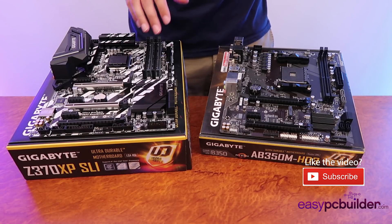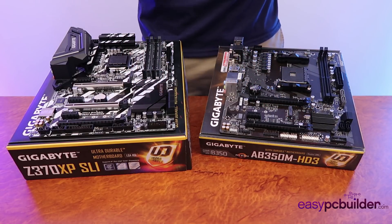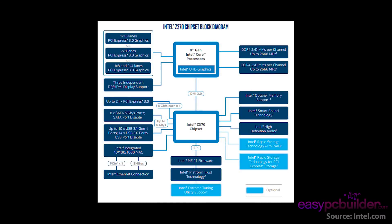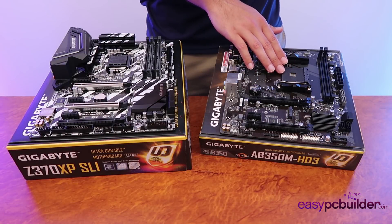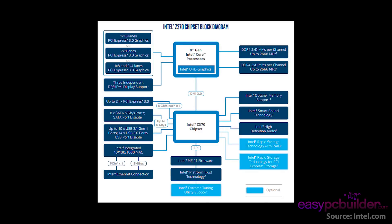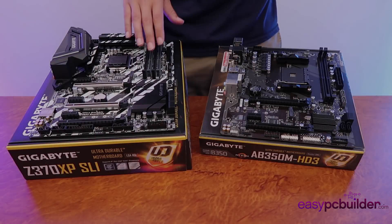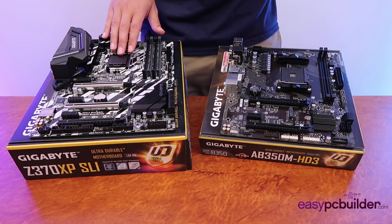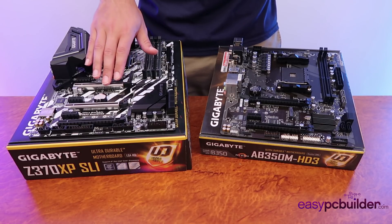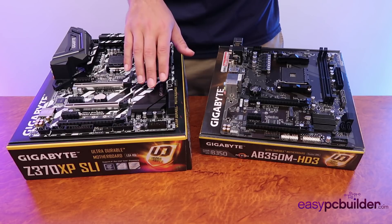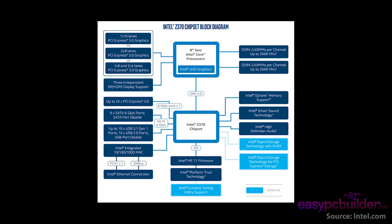The motherboard chipset, in conjunction with the CPU, defines the when, where, and how of data transferred to and from each component. The chipset is paired to the CPU type and is generally released and phased out alongside the CPU for maximum compatibility. Due to the large data volumes between RAM, graphics cards, and CPU, the CPU now directly controls that data flow, with the chipset handling lower-bandwidth tasks such as USB, SATA, networking, and slower PCI Express slots.